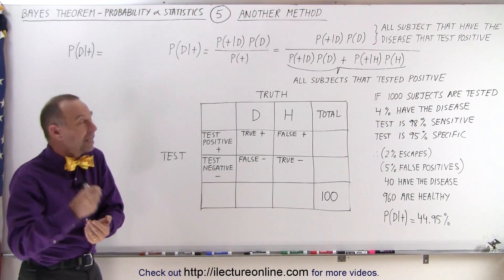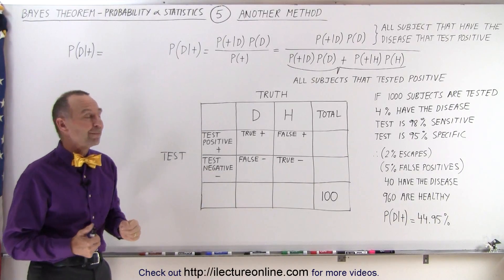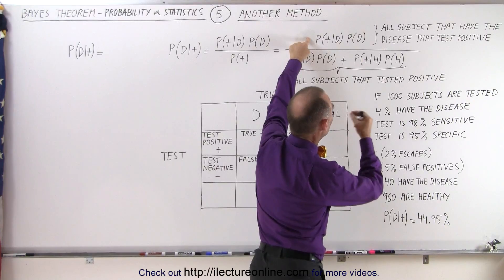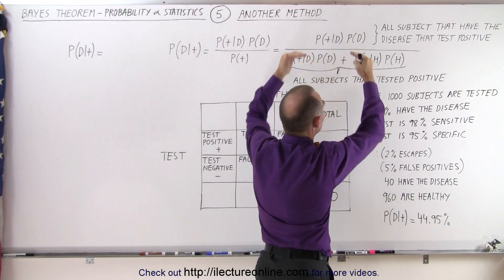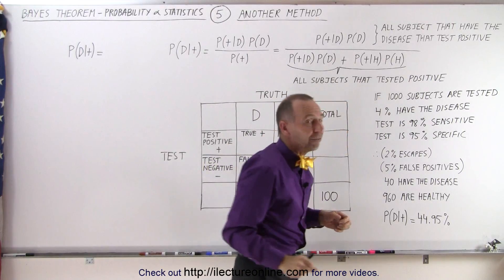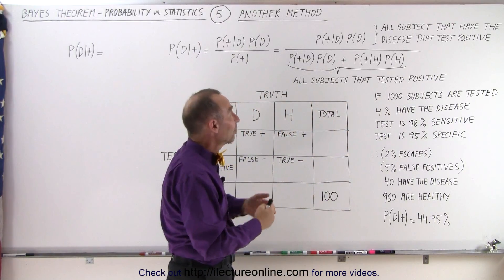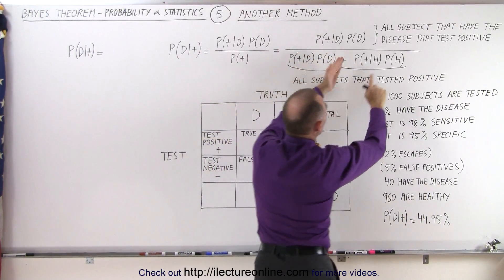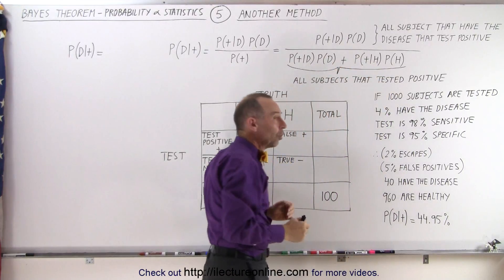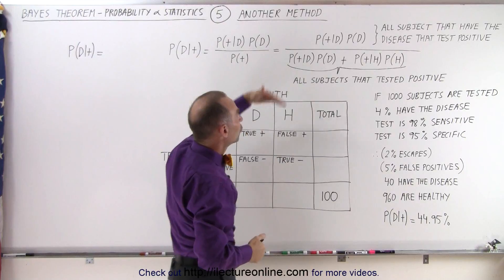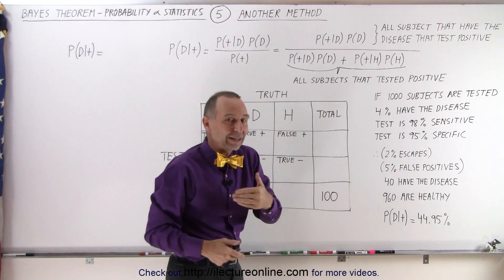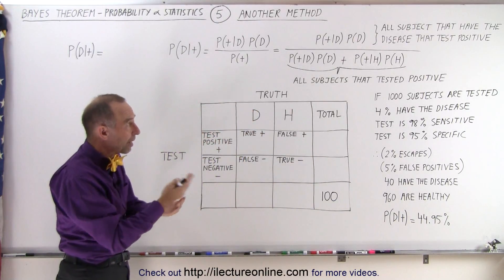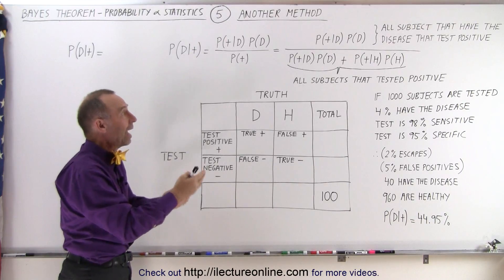Just because a subject tests positive doesn't mean they have the disease — there's a probability associated with that. What we saw in the previous video is that it's a ratio: in the numerator, we have all the subjects that have the disease and test positive, divided by all the subjects that test positive, because not all who test positive actually have the disease. We would like the numerator to be almost as large as the denominator, so that the ratio gets close to 1 — we want to be as sure as possible that someone who tests positive actually has the disease.